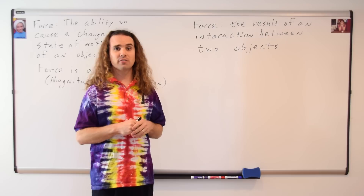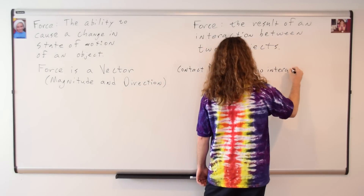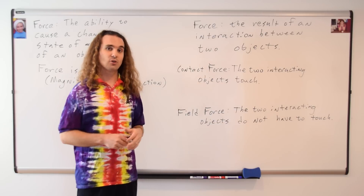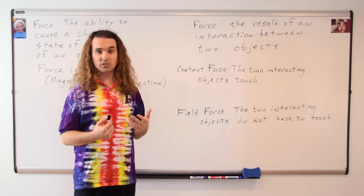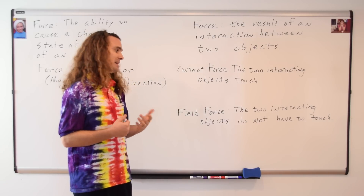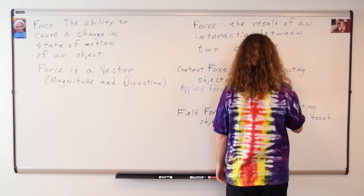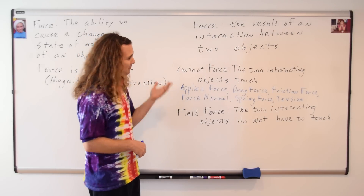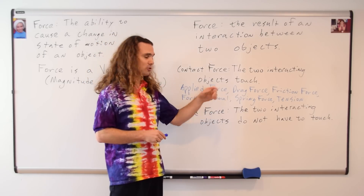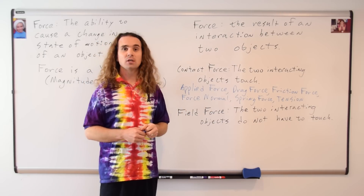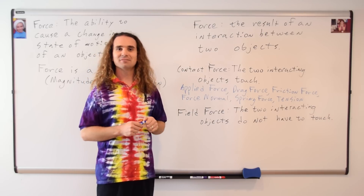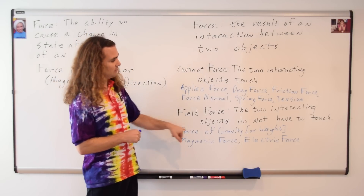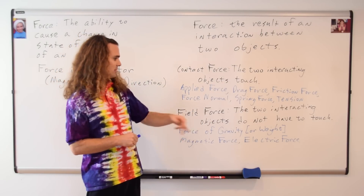And finally, two different categories of forces: contact force and field force. With a contact force, the two interacting objects will touch one another. And in a field force, the two interacting objects do not have to touch one another. Some examples of contact forces are the applied force, the drag force, the force of friction, the force normal, the force caused by a spring, and the tension force — and we will define them, just not today. Some examples of field forces are the force of gravity, which is also called weight, the magnetic force, and the electric force.